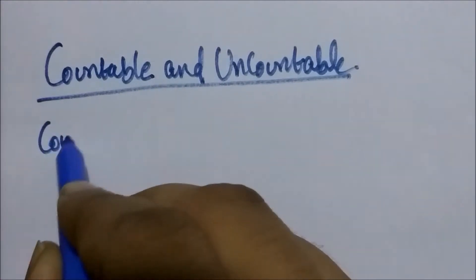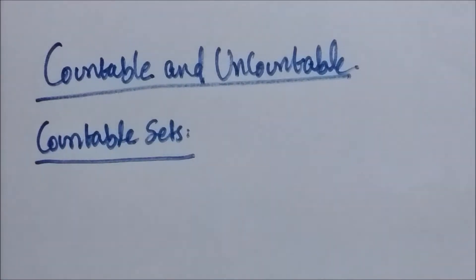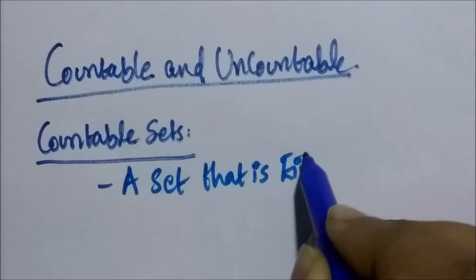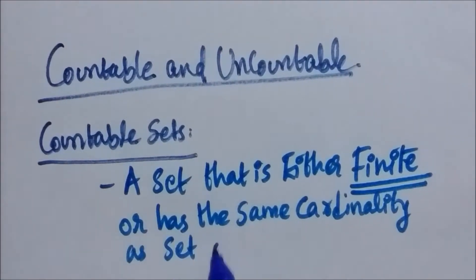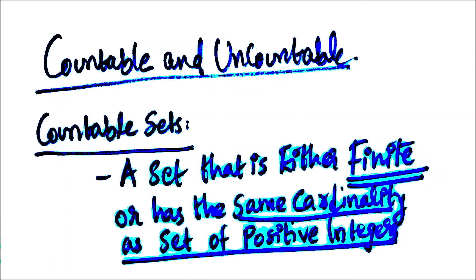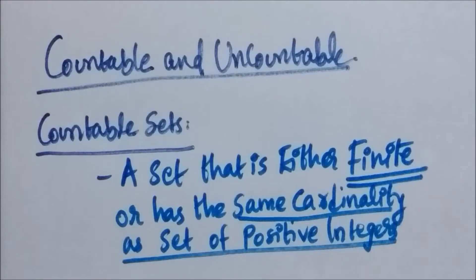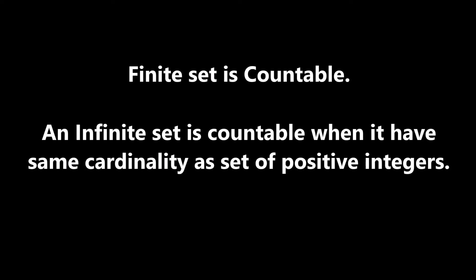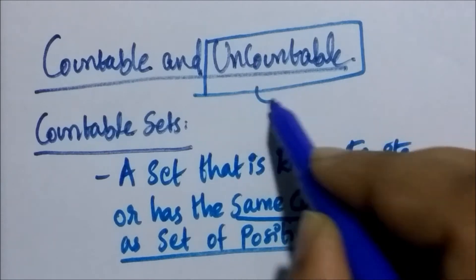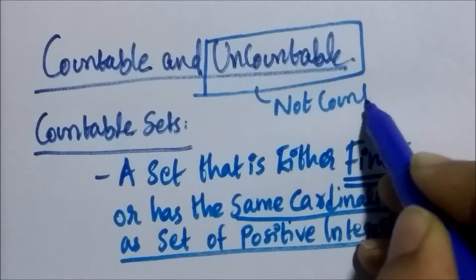Let's see what is a countable set. A countable set is a set that is either a finite set or has the same cardinality as the set of positive integers. If a set is a finite set, then that set is countable. If it is an infinite set, it has to have the same cardinality as the set of positive integers for us to say it is a countable set. An uncountable set is simply a set which is not countable.